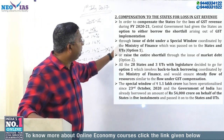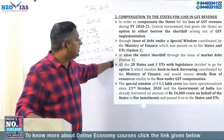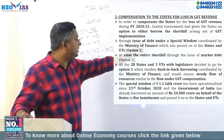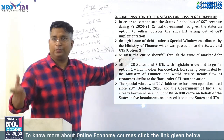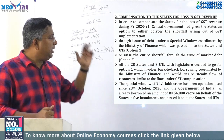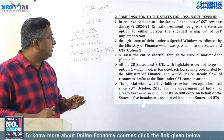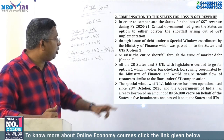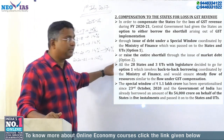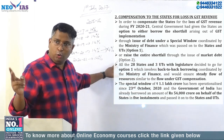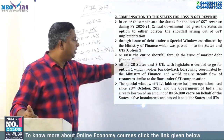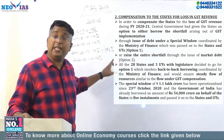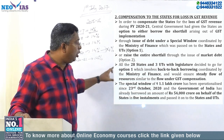Under option one — the special window — the center borrows for the states. The issue of debt is under a special window, coordinated with the Ministry of Finance. The center borrows and passes it on to the states. Under option two, the states can borrow the entire shortfall but must borrow directly from the market. All 28 states preferred option one.